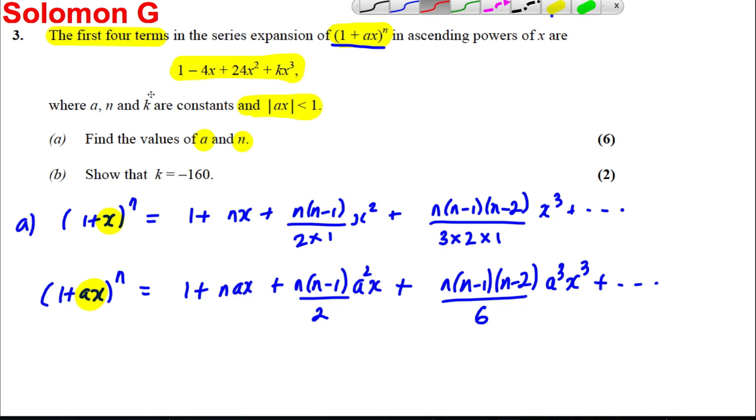Now, we are actually told that this is equal to the following. We are told this is equal to 1 subtract 4X plus 24X squared, by the way, plus KX cubed. So we can equate coefficients of each of these to see what numbers N and A must be. So let's have a go at doing that.